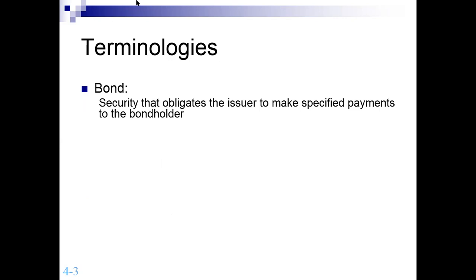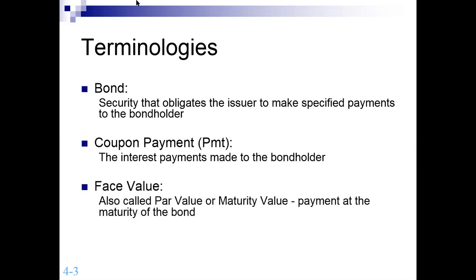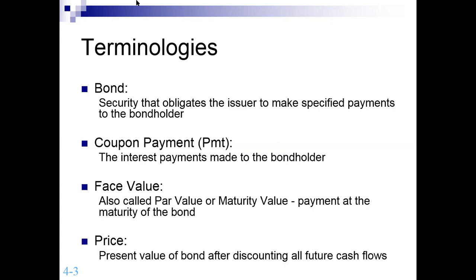Whenever we discuss a bond, it means this is a security that obligates the issuer to make specified payments to the bondholder. Suppose a company requires a certain amount and plans to issue bond certificates — these bonds will be bought by various investors, including the general public or other companies. Whoever buys these bonds will receive interest payments, normally on an annual or half-yearly basis. After a certain time period, you will be able to recover the par value of the bond. If maturity is three years, you receive the par value at the end of year three; if five years, after five years. The price of a bond is the present value obtained after discounting all future cash flows.